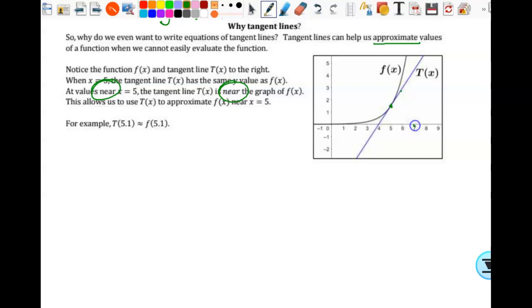And then the farther I go when I'm at 7, they're no longer that close. That wouldn't be a good approximation. But anything right around here in this little neighborhood, they're still kind of close. We're just trying to approximate. So for example, t(5.1) is about f(5.1). They're about the same. They're exactly the same at 5. They're close to the same at 5.1. We good with that?